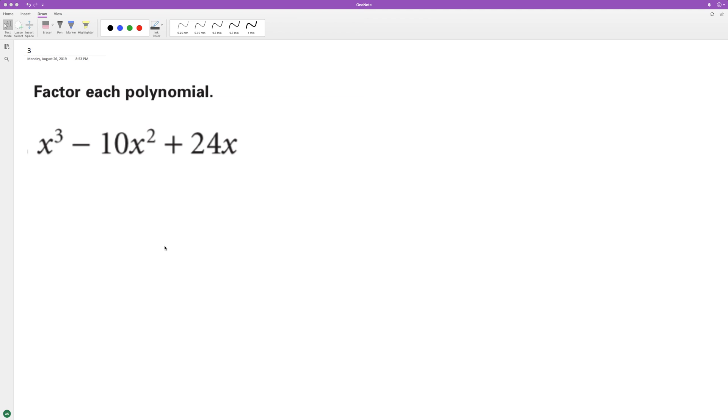For the polynomial, starting off here, we can factor out an X. So we have X times quantity X squared minus 10X plus 24.